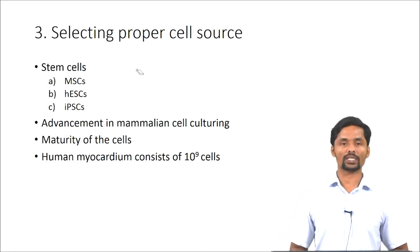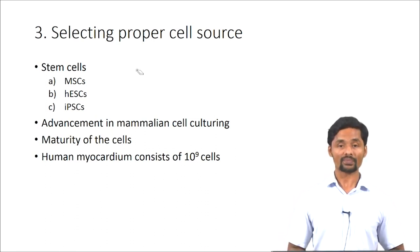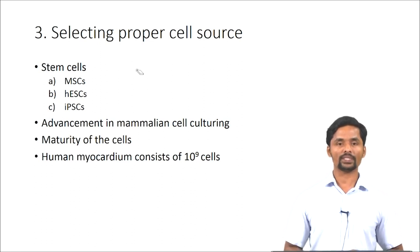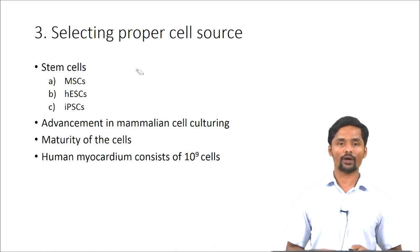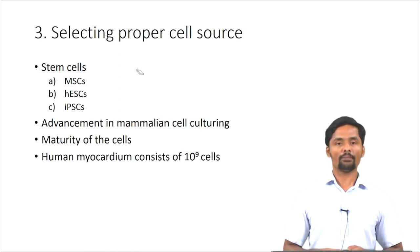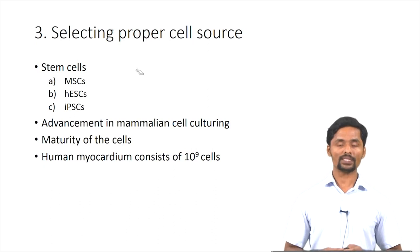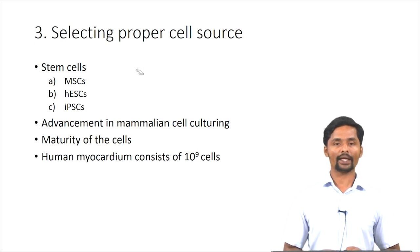We now move on to the third challenge: selecting a proper cell source. In this section, we will talk about different types of stem cells that have been exploited in tissue engineering applications. As we know, stem cells have the potency to differentiate into many cell types. The first is mesenchymal stem cells (MSCs), which are multipotent adult stem cells able to differentiate into several cell types of the body but not all. MSCs can be isolated from bone marrow, adipose tissue, and dental tissues, but they are multipotent, not pluripotent.